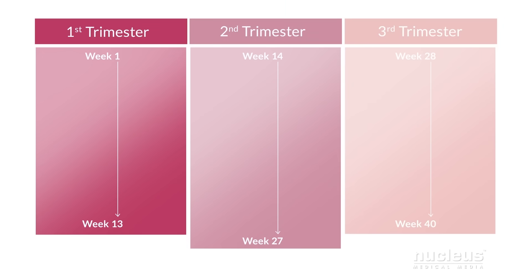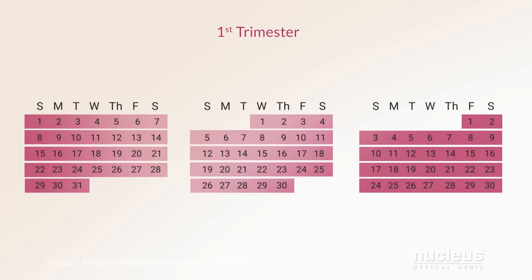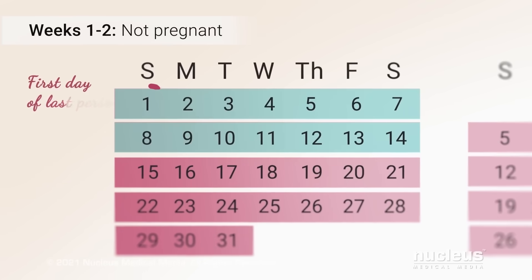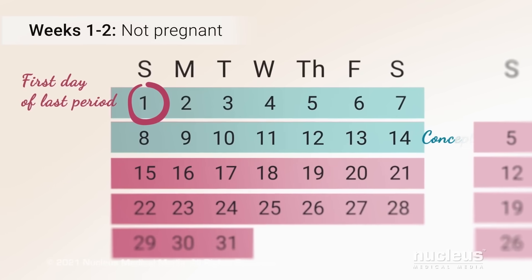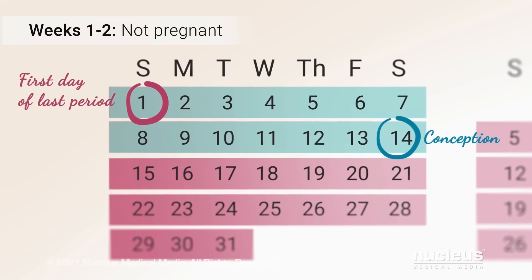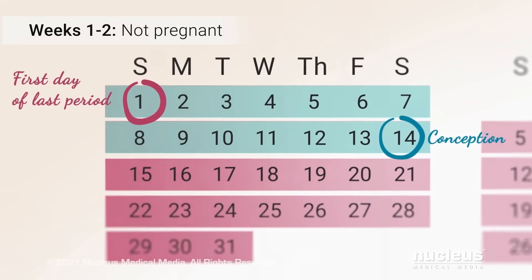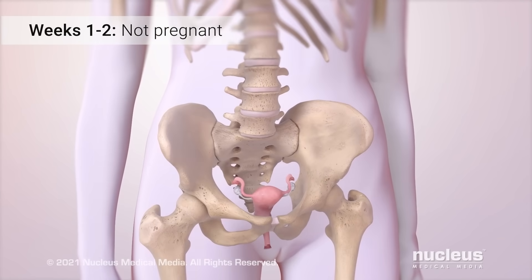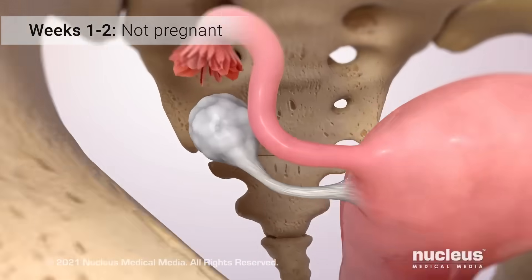The first trimester lasts about 13 weeks. During the first two weeks, you aren't actually pregnant because of the way your due date is calculated, but your body is preparing for pregnancy.